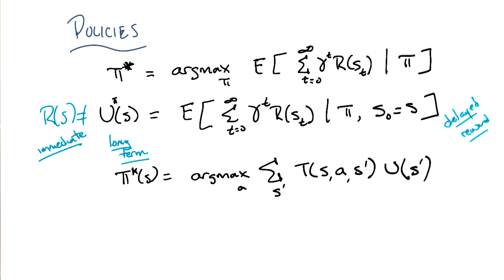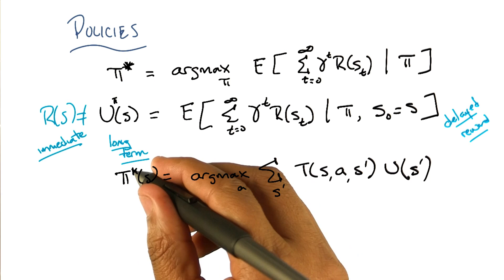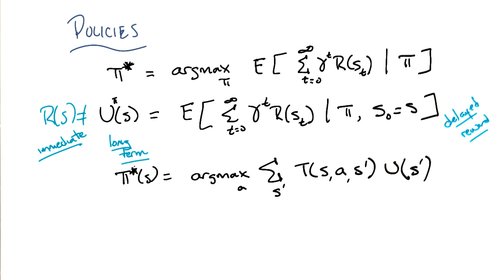Let's see. So the policy, is that a star again, or is that a k? That's a star. So it's the optimal policy. All right. The optimal action to take at a state is, well, look over all the actions and sum up over all the next states. The transition probability, right? So that's like the probability that we end up in state s prime.